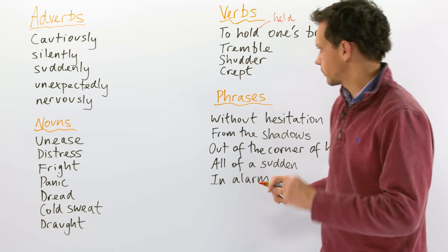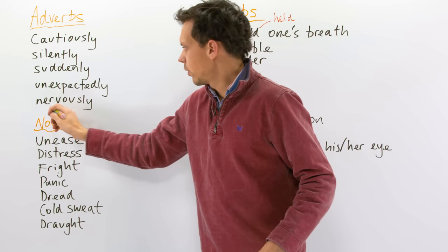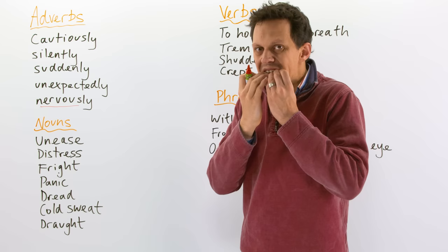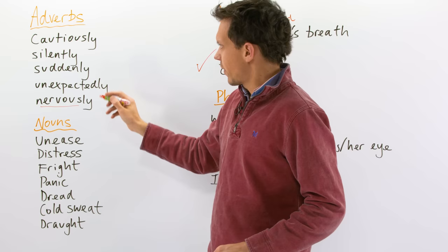He crept... And now let's add another adverb. He crept nervously. So, nervously. He's full of nerves. He's like biting his teeth about what's going to happen when he steps out into the corridor. He crept nervously out into the corridor. So I've used my verbs.